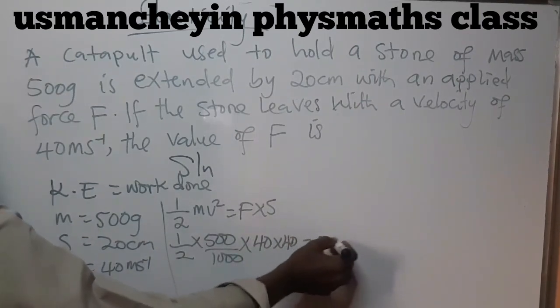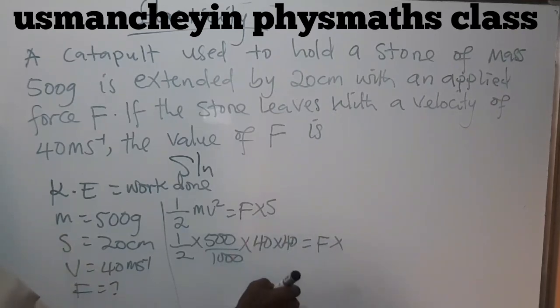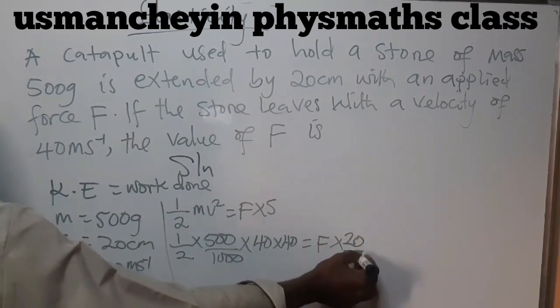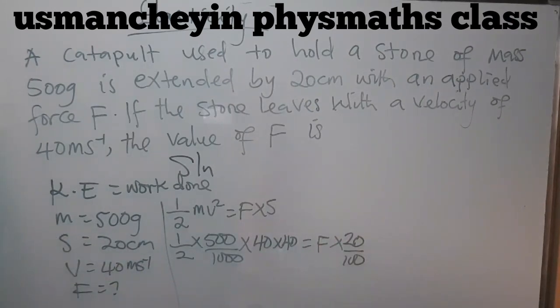F is what we are calculating. S should be the distance, which is 20. I will divide it by 100. If you ask me why, I will tell you I'm converting it to meters, because it's given in centimeters.